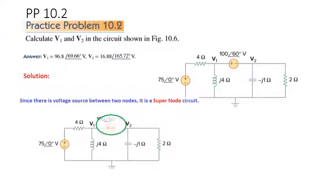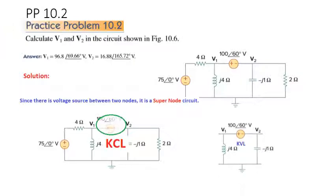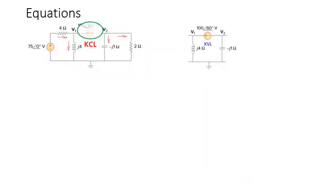For the supernode, two actions are to be taken. First of all, this whole region is considered as one node, and we write the KCL equation for it. The second thing is that the supernode area is separately considered, and here we write the KVL equation.